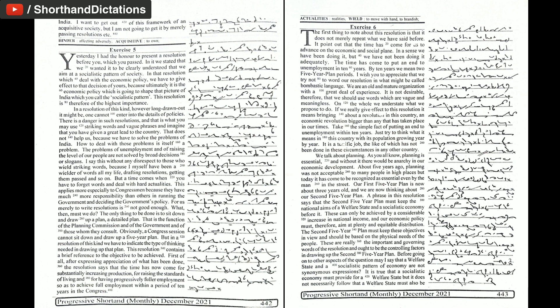The only thing to be done is to sit down and draw up a plan, a detailed plan. That is the function of the planning commission and of the government and of those whom they consult. Obviously, a congress session cannot sit down and draw up a five-year plan. But in a resolution of this kind, we have to indicate the type of thinking needed in drawing up that plan.